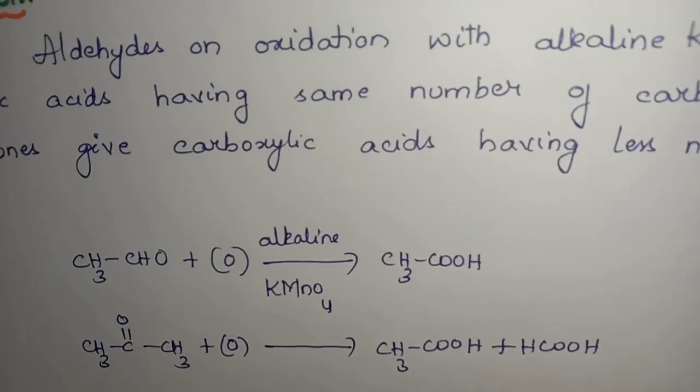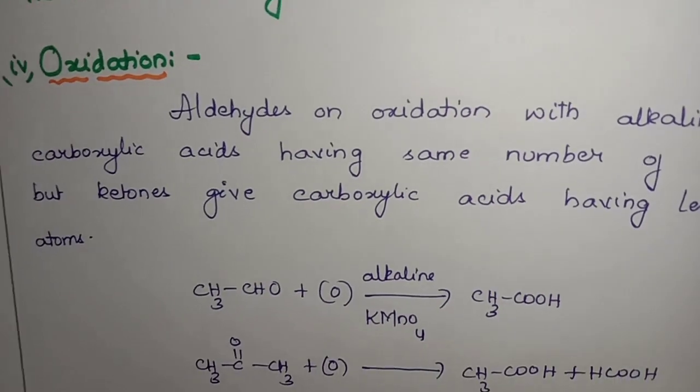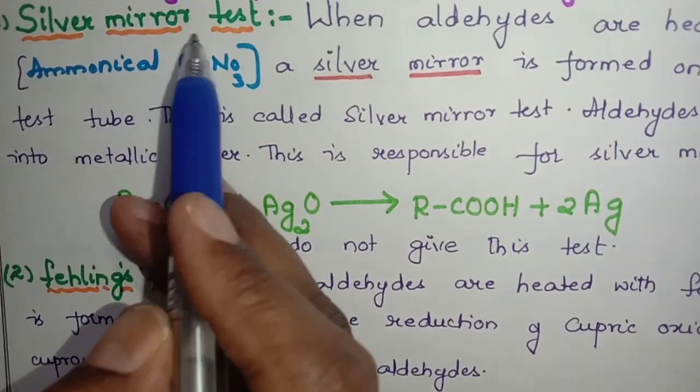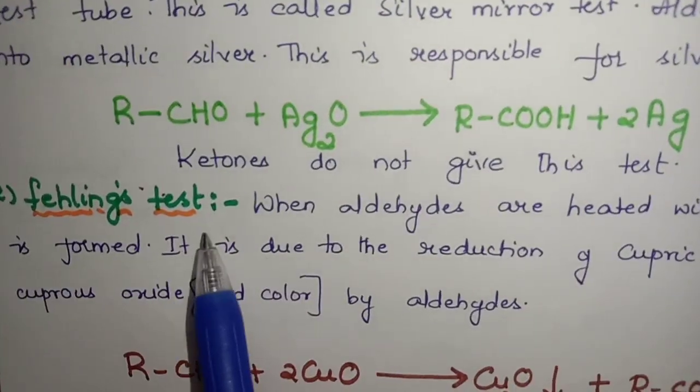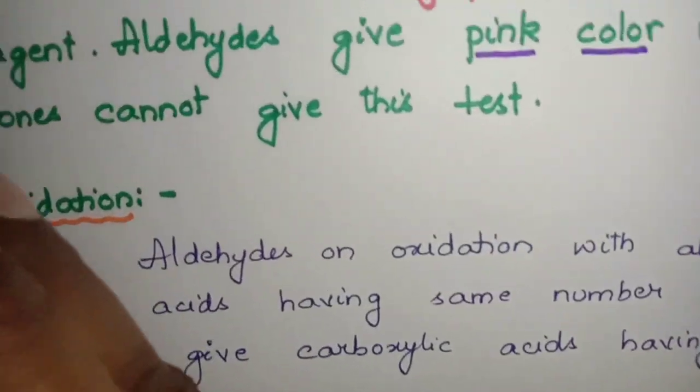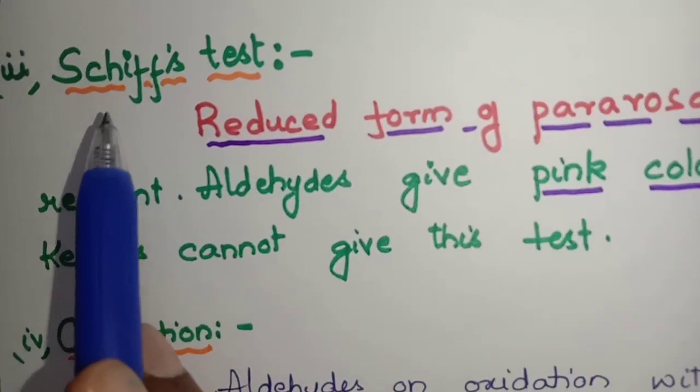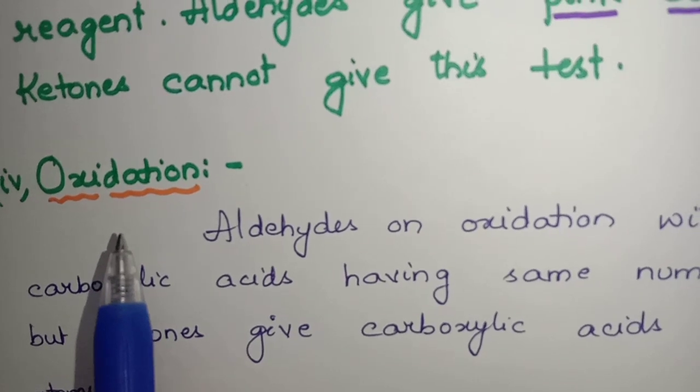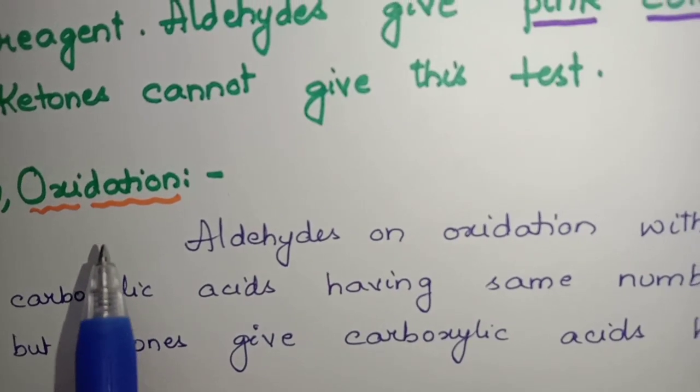We have learned four tests to distinguish aldehydes and ketones. First one is silver mirror test, second one Fehling's test, third one Schiff's test, and fourth one is oxidation. Read well and learn well. Thank you.